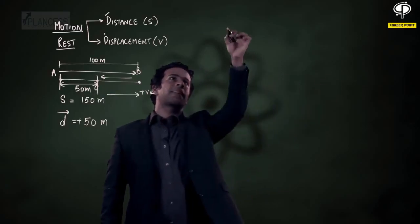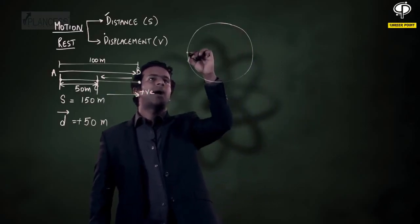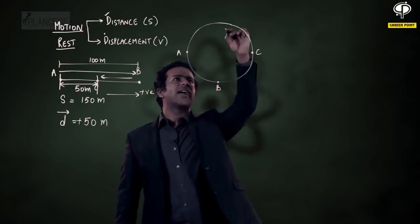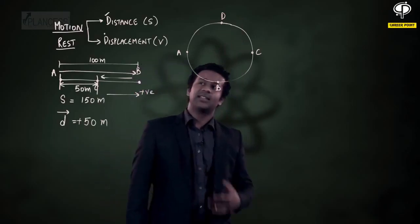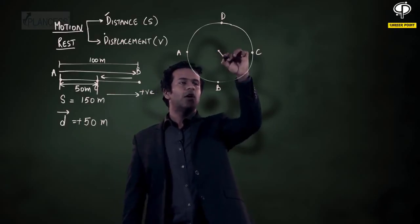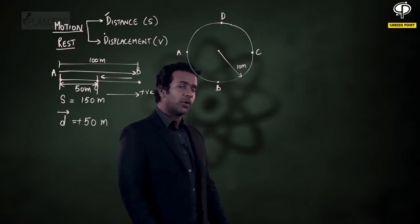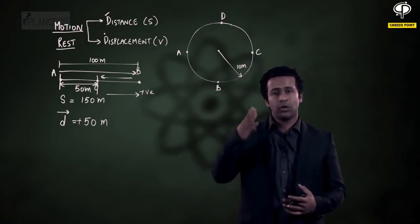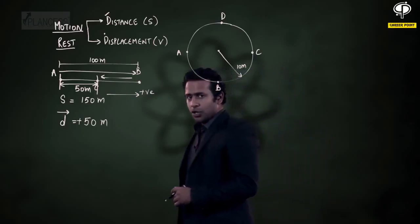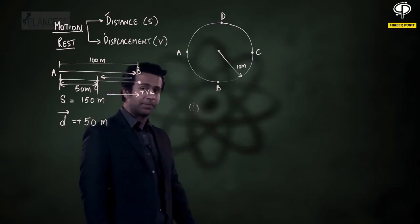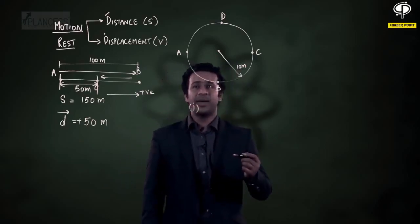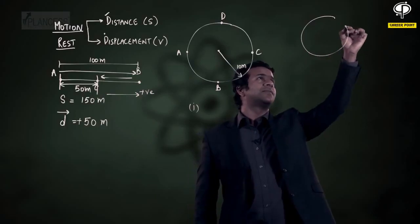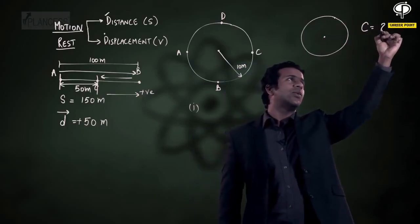Let's take a slightly more tricky example. Say a particle goes from point A to point B, further moves on to point C, and finally reaches point D. The path it is taking is basically a circle of radius 10 meters. We wish to find the distance covered and the displacement of this particle as it goes from point A to point D via B and C. Let's first think about the distance covered, which is the length of sector ABCD. In a circle, the total circumference is equal to 2πr.